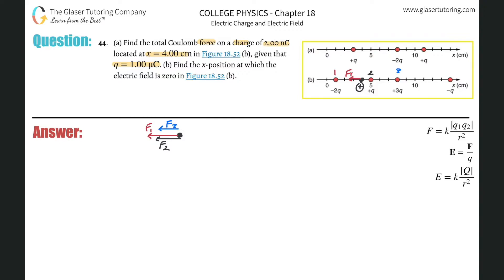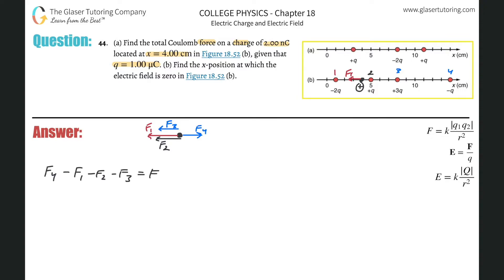Last but not least, number four. This is negative and this is positive, therefore it's an attractive force, so it's going to be pointing to the right. So this will be F4. If I want to find the total force, I'm going to add them all up. The only positive one, because it's pointing to the right, is F4. And then we're going to subtract all the others: minus F1, minus F2, and minus F3. That will equal the total force.